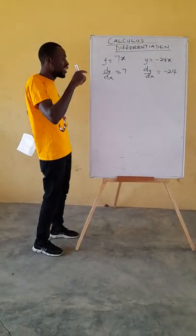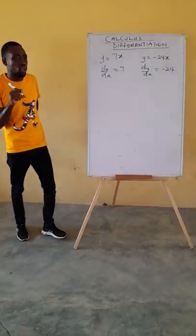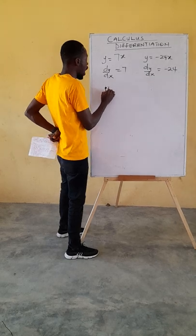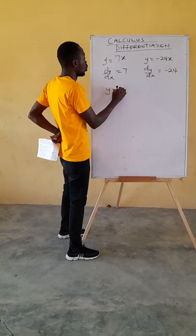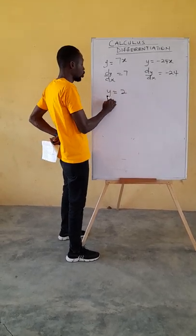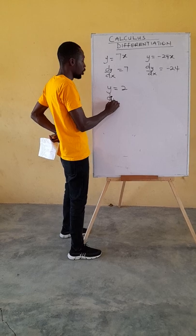Now, the differentiation of a constant is always 0. So if I have y equal to 2, and I'm asked to find the gradient, that is 0.